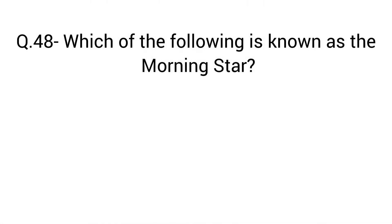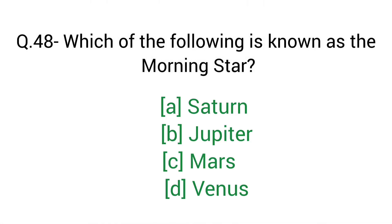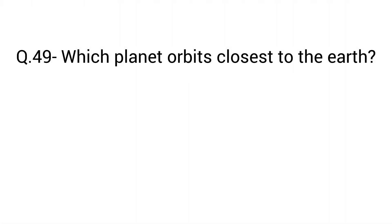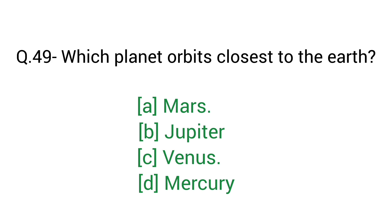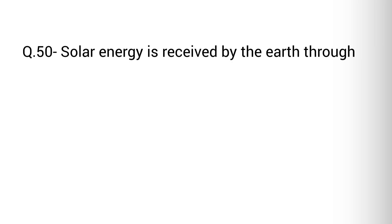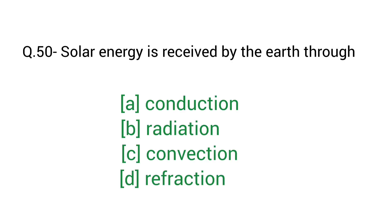Question number 48: Which of the following is known as the morning star? Right answer D — Venus. Question number 49: Which planet orbits closest to the Earth? Right answer D — Mercury. Question number 50: Solar energy is received by the Earth through? Right answer — Radiation.